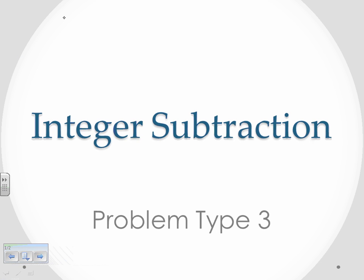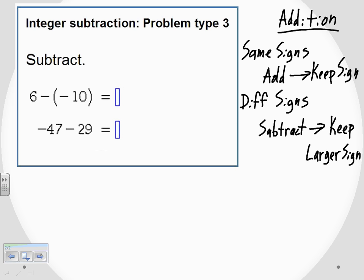For this video, we'll be looking at integer subtraction problem type 3. We're asked to subtract a couple of different problems here: 6 minus negative 10, and negative 47 minus 29.